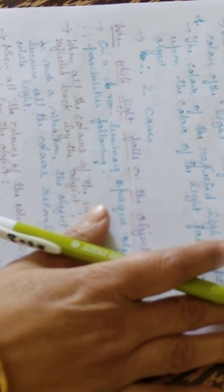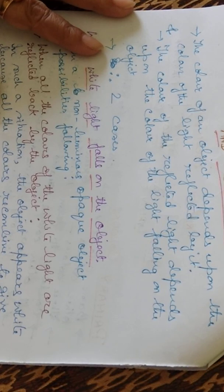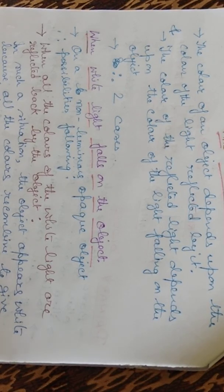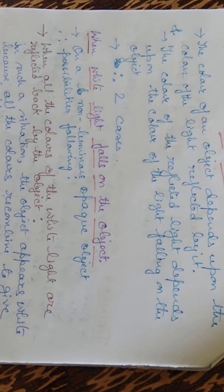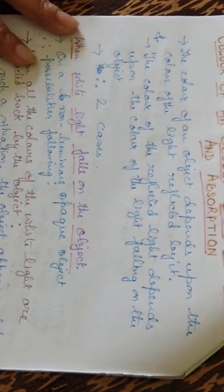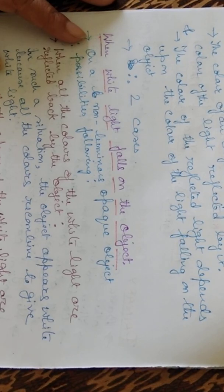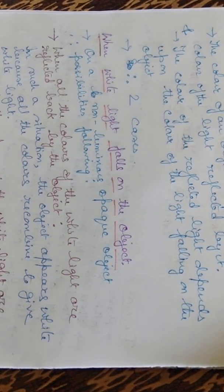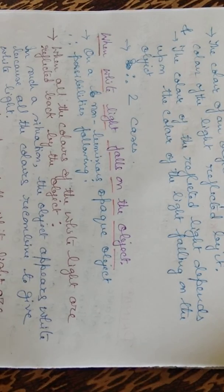Now we come to the colors of an object based on reflection and absorption. The color of an object depends upon the color of the light reflected by it. The color of the reflected light depends upon the color of the light falling on the object. So there are two cases: what color the object is reflecting back, and what color of light is falling on that object.